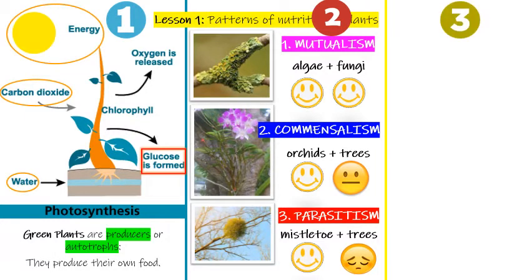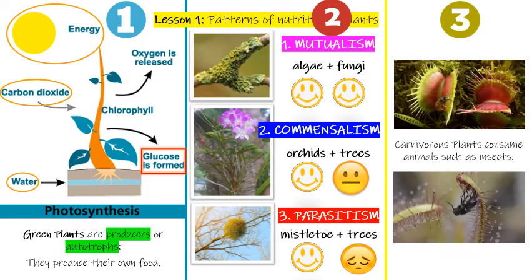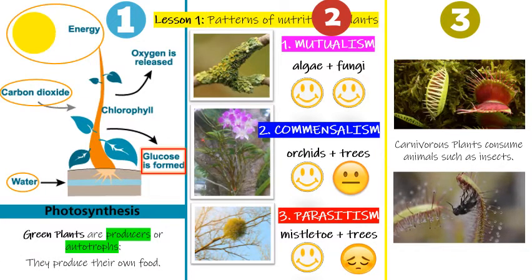The last pattern of nutrition is for carnivorous plants. Most carnivorous plants go through photosynthesis, but the food that they make isn't enough, so they need another way to get food. They consume insects or animals, as you can see in the pictures.